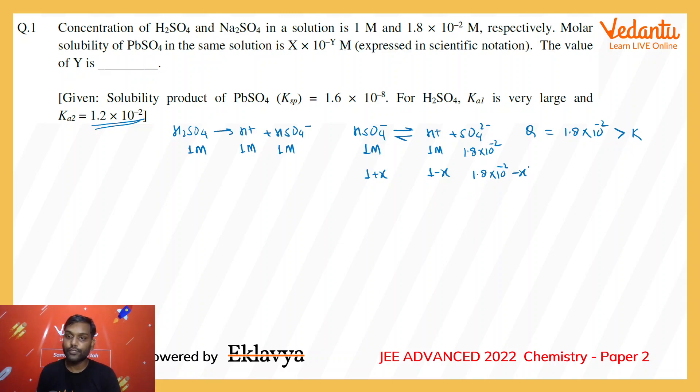One thing we can say for sure is that x is going to be very small because x has to be less than 1.8 × 10^-2 as the entire sulfate will not be converted back to the HSO4- ion.